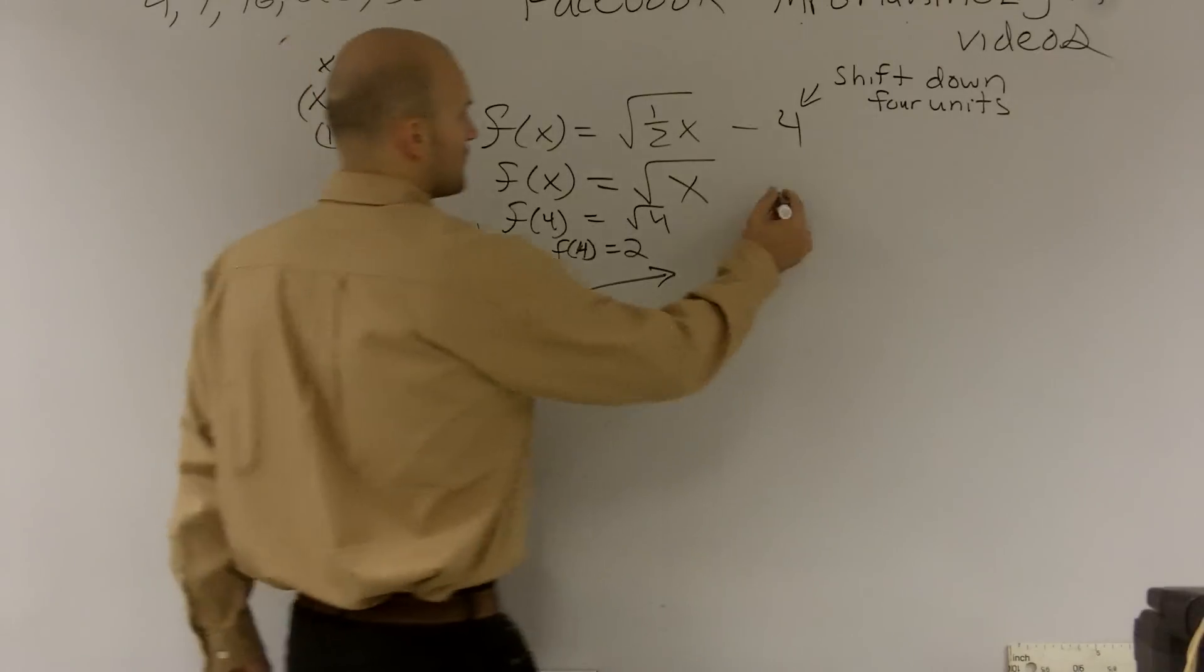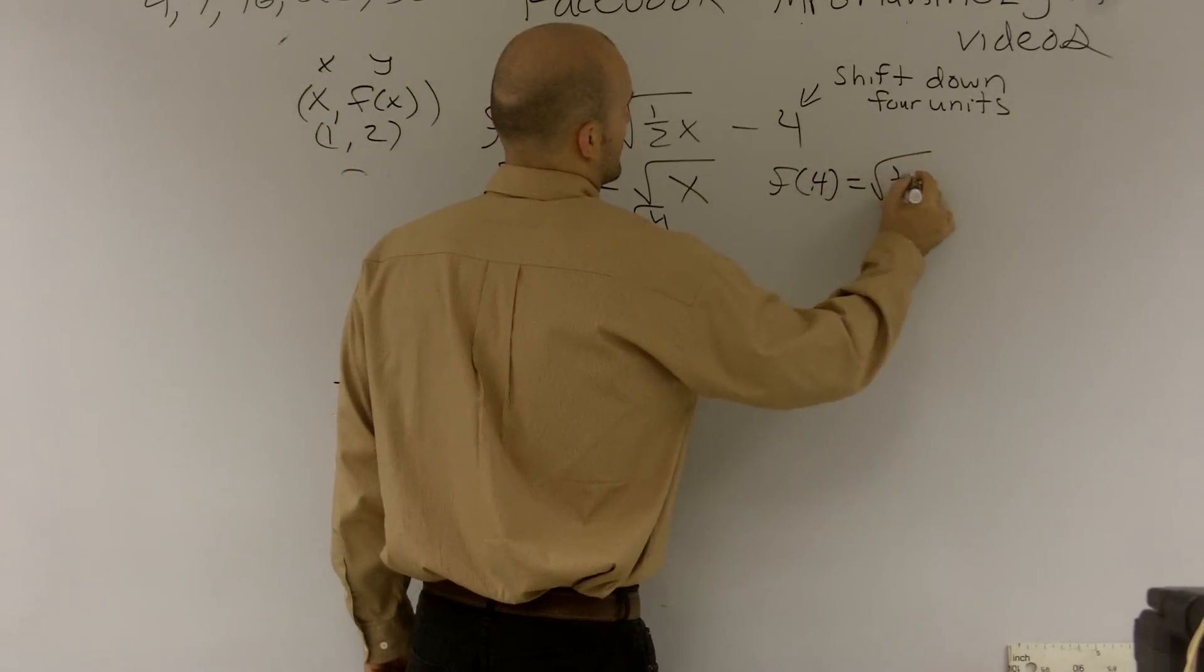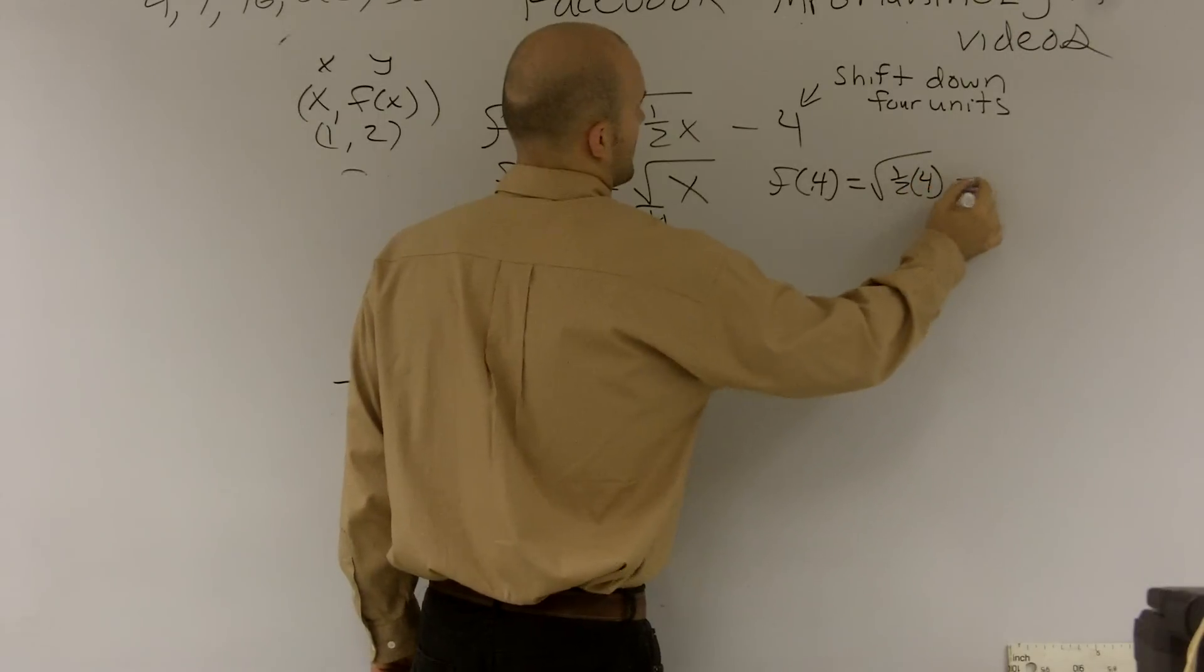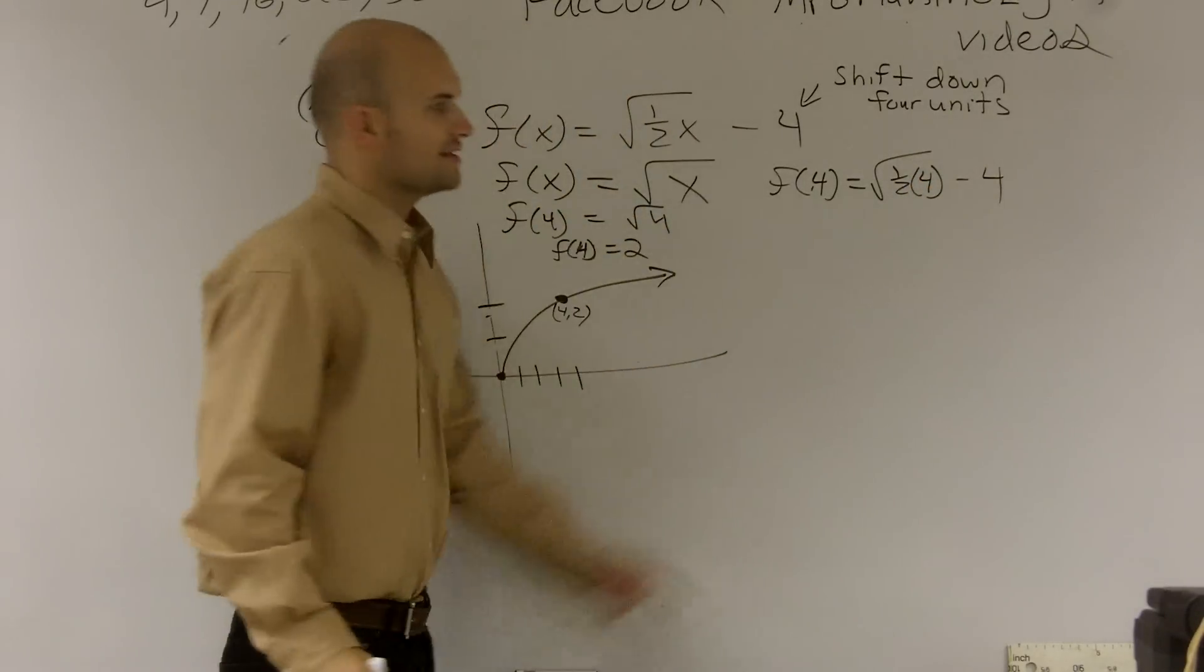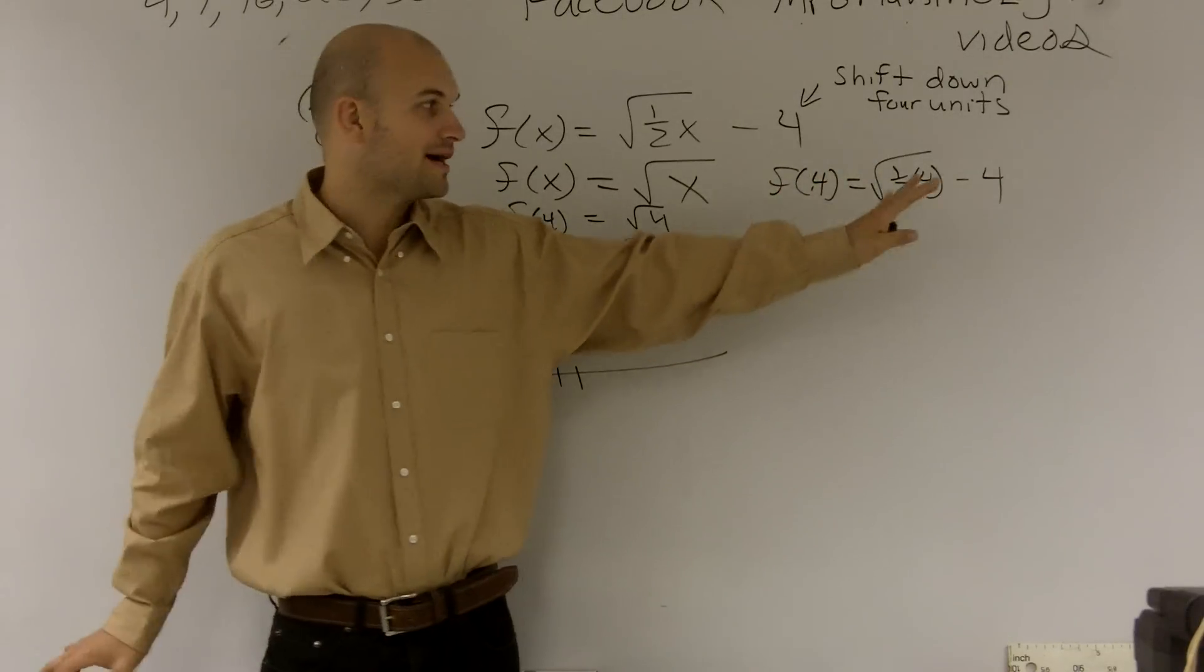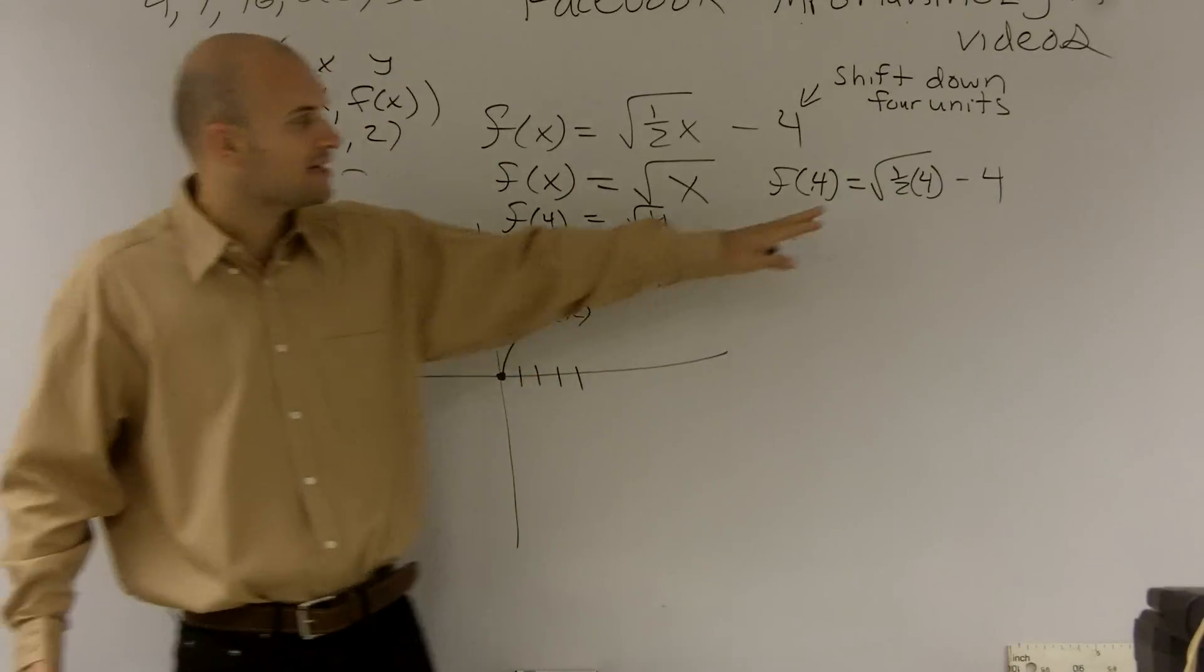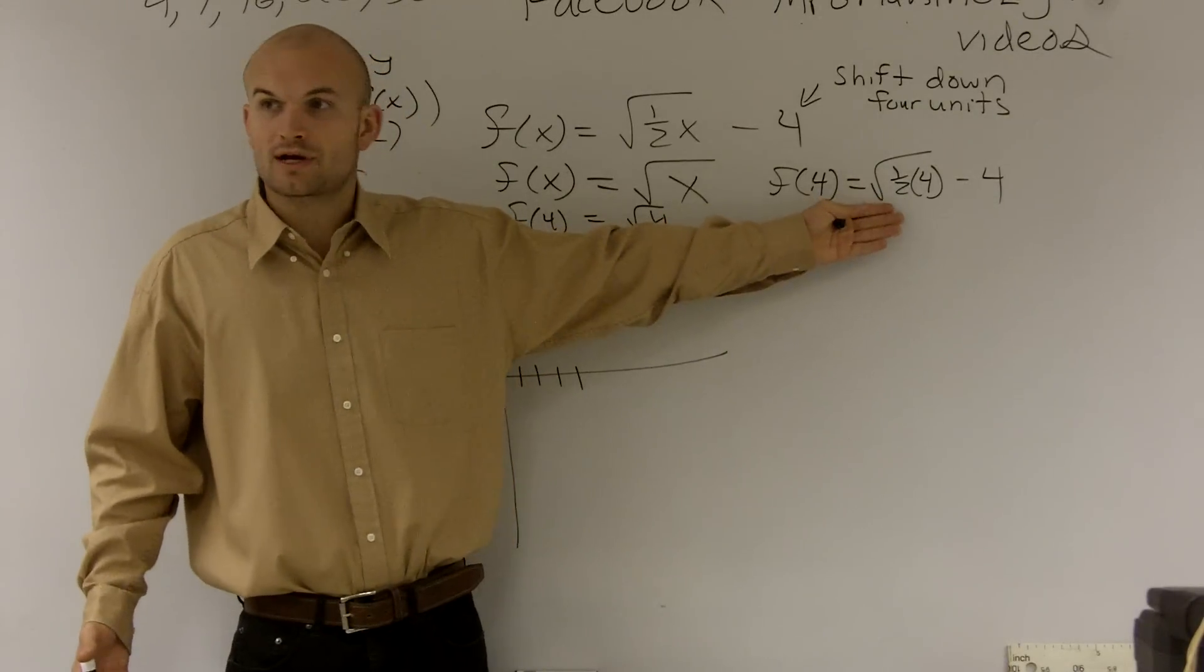Well, if I do f of 4 for this function, that gives me the square root of 2, which is going to give me a rational number. I don't want to try plotting that. But let's pick a point just for plain sake. Let's pick a point that actually would work on this. Okay? Let's pick 8.